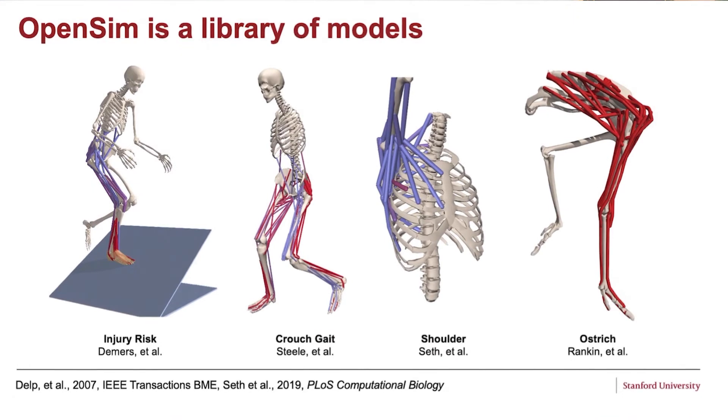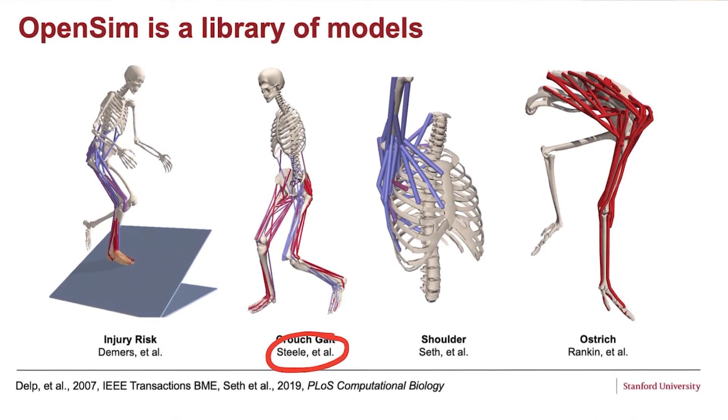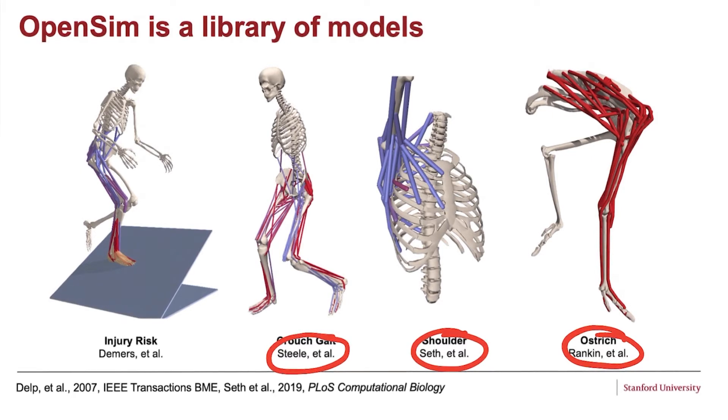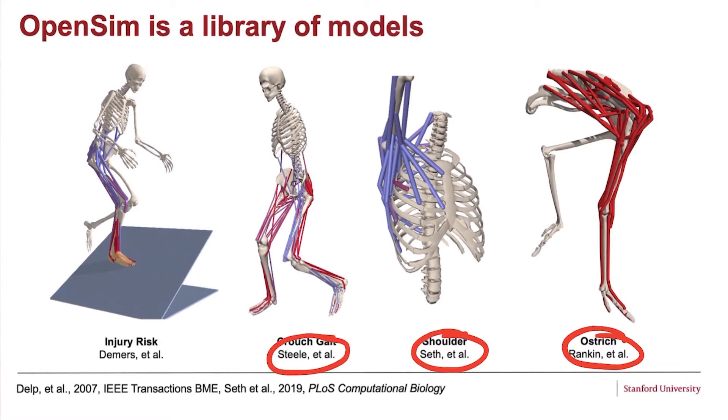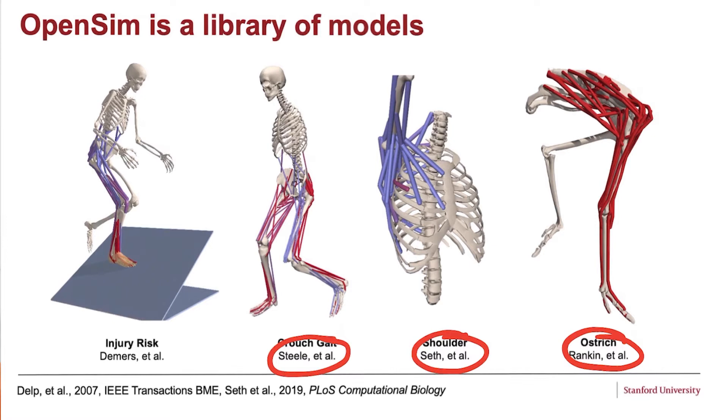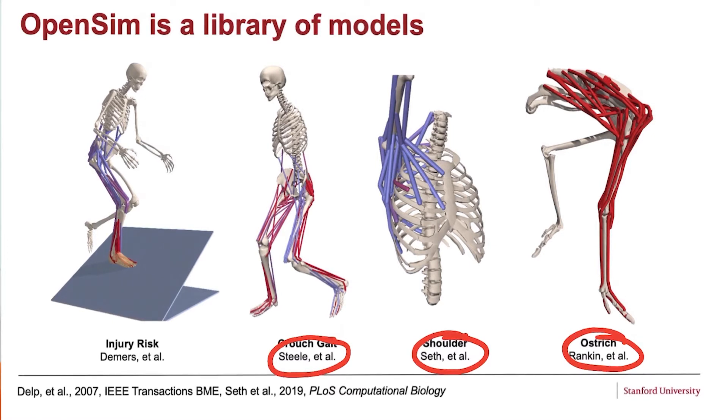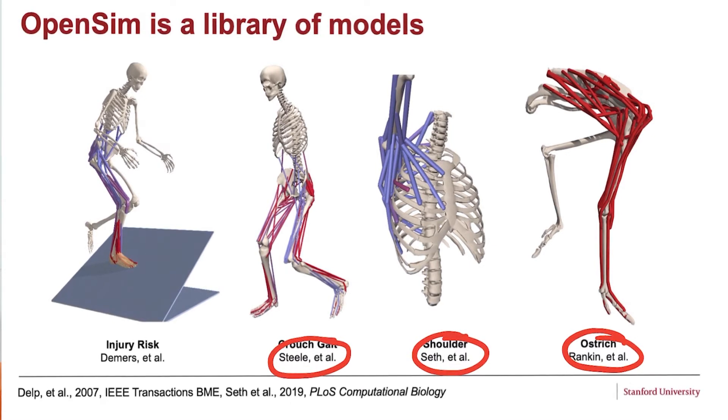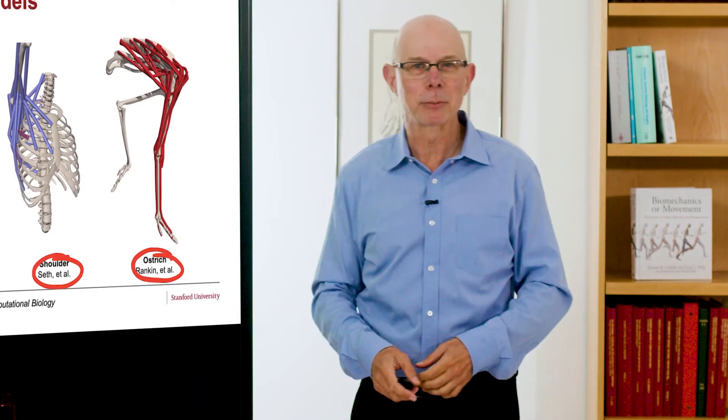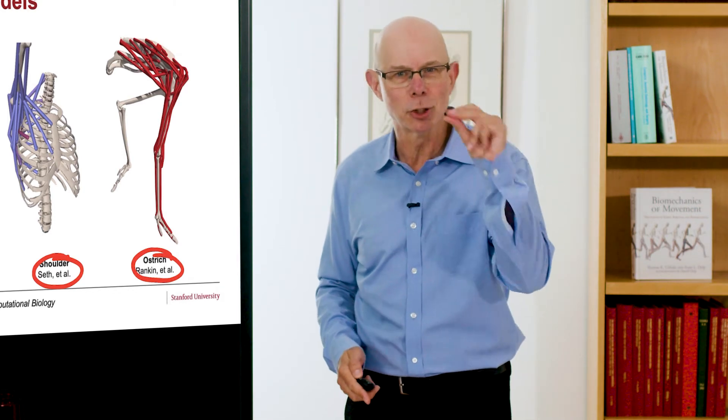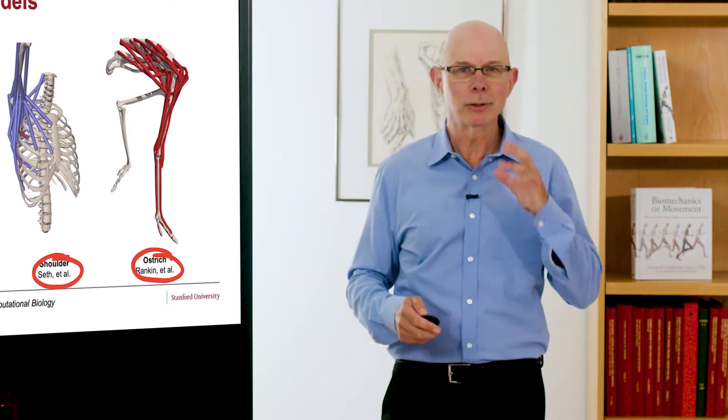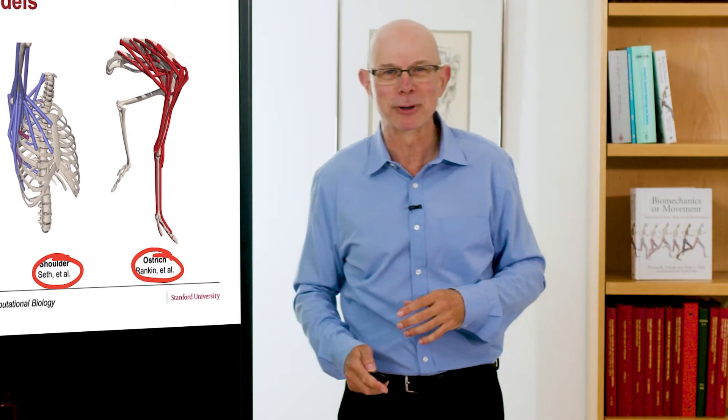Kat Steele has made really nice simulations available of crouch gait, AJ Seth, the shoulder model. This ostrich model was more than a decade in the making. It started when John Hutchinson was a postdoc here, but we didn't publish it until almost 10 years later. There was so much work that went into gathering data for the model, refining it and testing it. So there's this online repository of models that's available to the community. So when you start a new study, you can just go pick a model. If it's applicable to your study, then you can start 10 years in advance of where you would be otherwise.